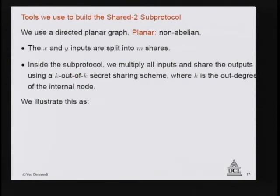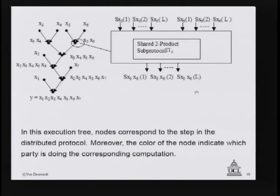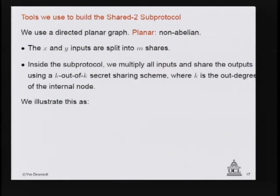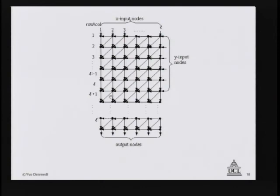The tool used to build each sub-protocol is k-out-of-k sharing. Inputs x and y are split into m shares. Inside the sub-protocol we only use k-out-of-k schemes, which are easy: choose k-1 random elements, then choose the kth so that their product equals the secret — a secret local to the sub-protocol. k is the out-degree of the internal node in the tree. Each sub-protocol receives shares for x and shares for y, with arrows indicating direction, whereas the original graph was undirected.